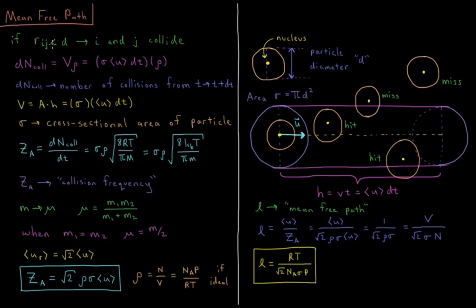If the distance between two particles is less than the diameter of the particle — two times the radius — the two particles are going to collide. The number of collisions a particle will have equals the volume it sweeps out as it moves times the density of the particles. That swept volume is the cross-sectional area of this tube times its length.